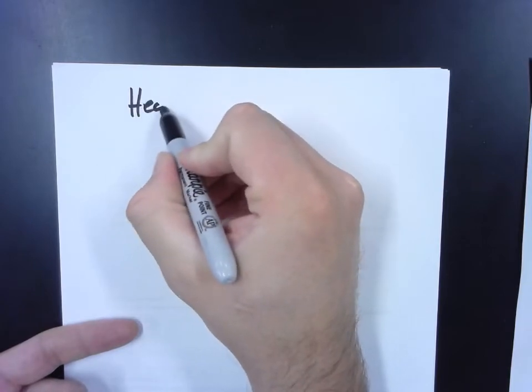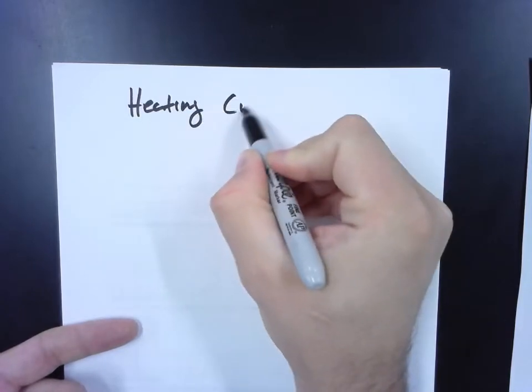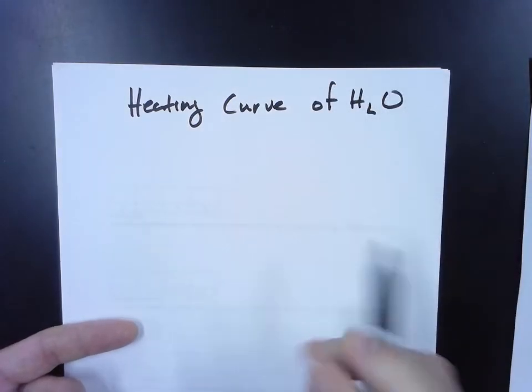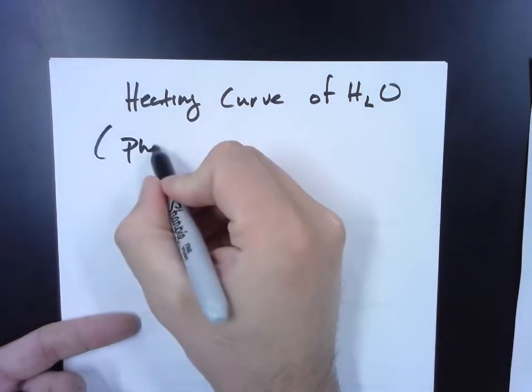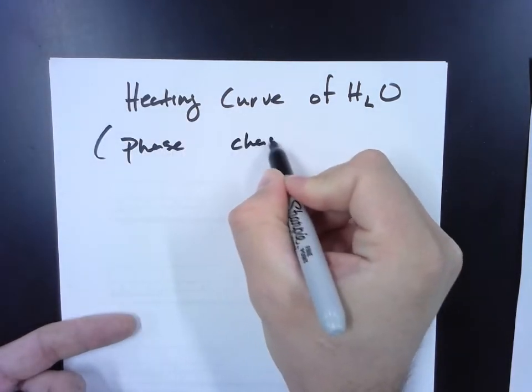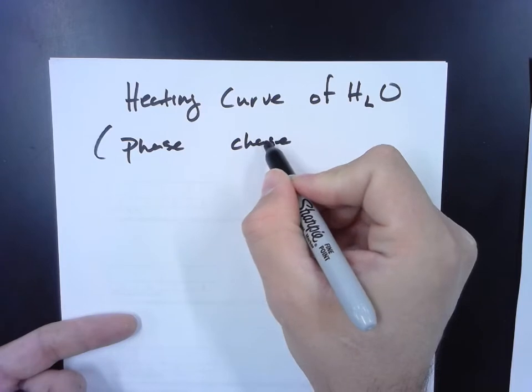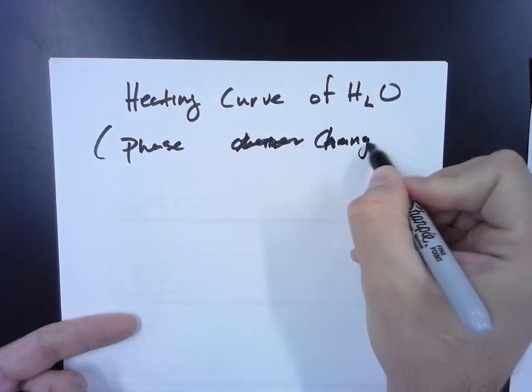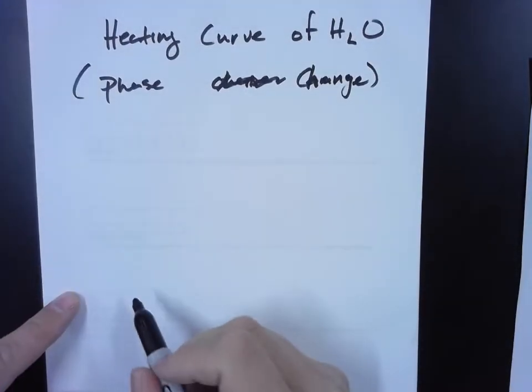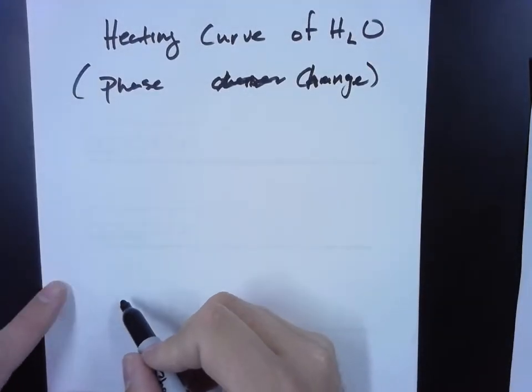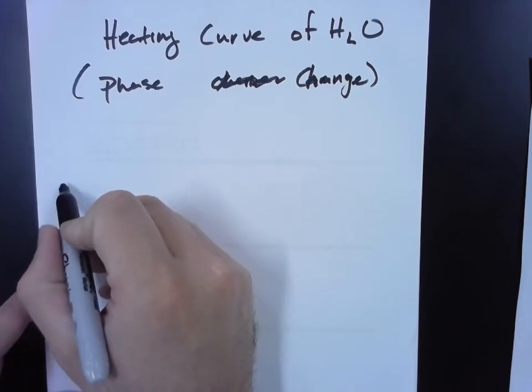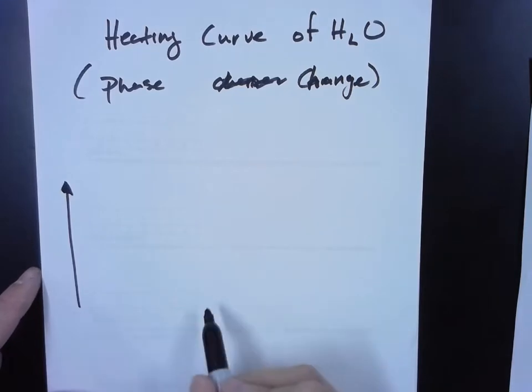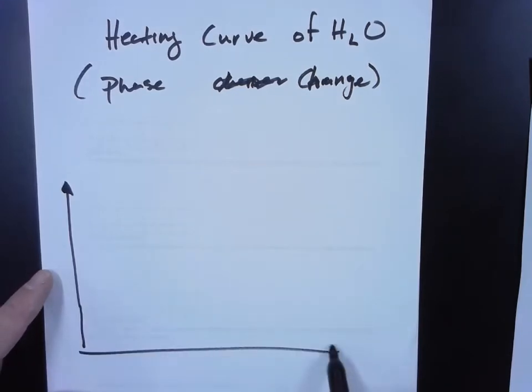We'll call this the heating curve of water. This is a phase change—a change in state. If I were to take some water and start to heat it up and plot the temperature over here on the y-axis, starting with zero or below zero down here, and then plot it over a certain amount of time, what I would see is this.